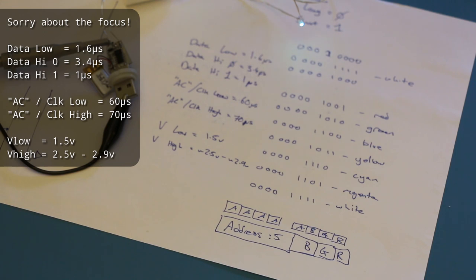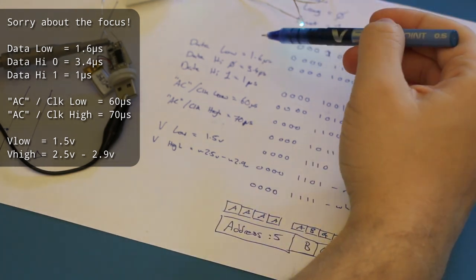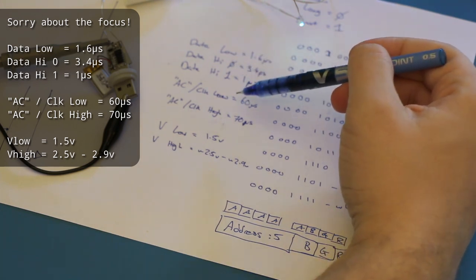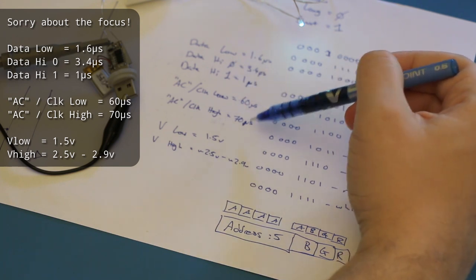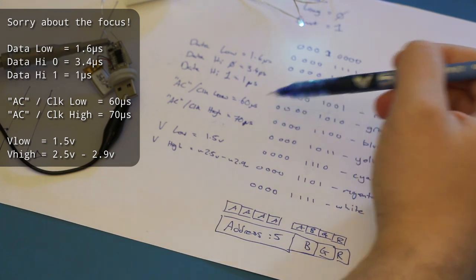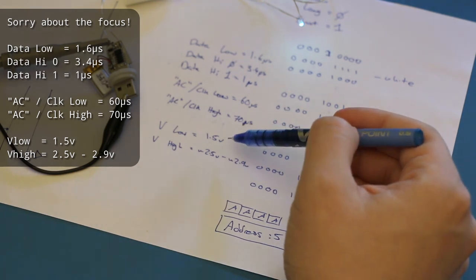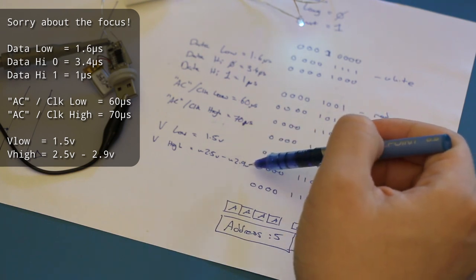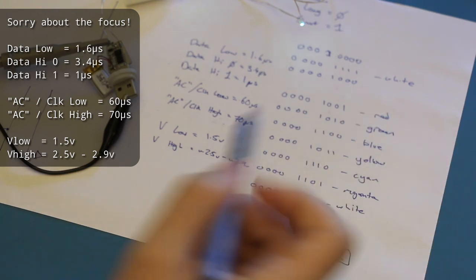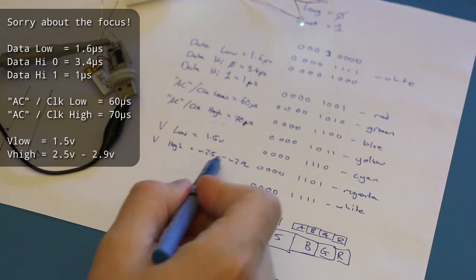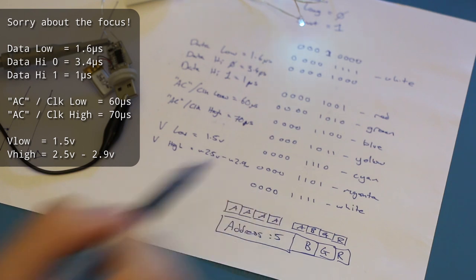Okay, so I've recorded the information from the scope. We've got the duration of the data low period, the data high for a zero, the data high for a one, and then the AC, or probably a clock signal, which is not quite a 50-50 split between high and low. The other key information that we obviously don't have because we don't have data sheet or anything is what voltage to run these at. The low signal is a really solid 1.5 volts, while the high is somewhere between 2.5 and 2.9 volts. I wonder if this will become much more solid when we plug it into a USB supply, or if actually that's varying because it's through a resistor. So let's do that quickly now.